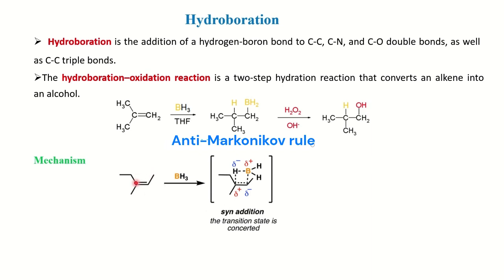In the first step, BH3 addition takes place on the double bond. Hydrogen adds to the more substituted carbon, and BH2 adds on the other side. Boron is slightly electropositive being electron-deficient, and hydrogen gets a partial negative charge, which adds to the electropositive carbon. Breaking the double bond generates a partial positive on one carbon and partial negative on the other. The positive charge forms where you have the more stable carbocation — here a tertiary carbocation — forming a four-membered transition state.